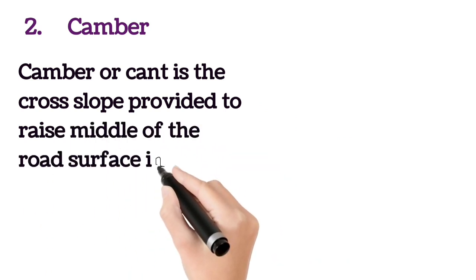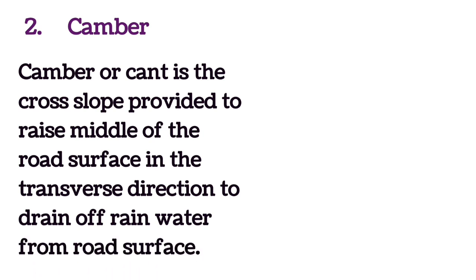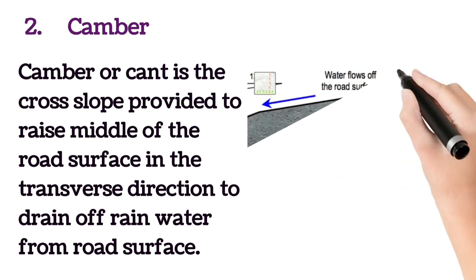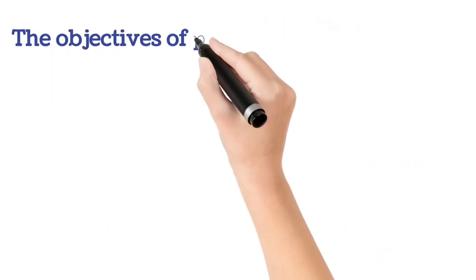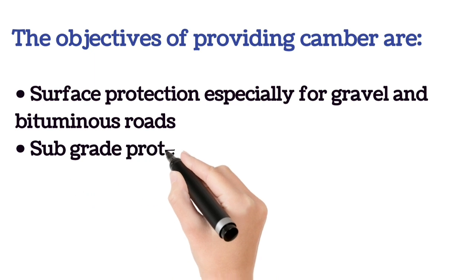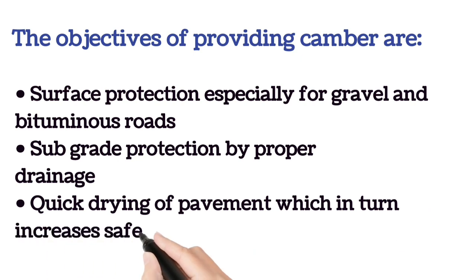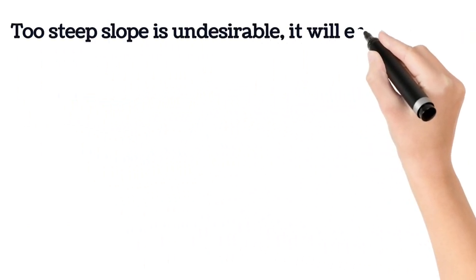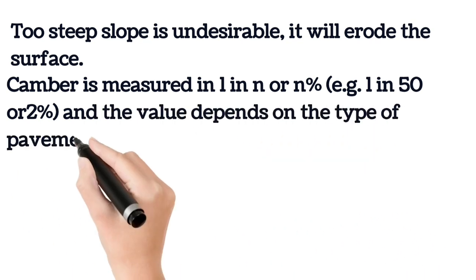Camber or cant is the cross slope provided to raise the middle of the road surface in the transverse direction to drain off rain water from the road surface. The central raised portion of the pavement is called camber. The objectives of providing camber are surface protection especially for gravel and bituminous roads, subgrade protection by proper drainage, and quick drying of pavement which increases safety. Too steep a slope is undesirable as it will erode the surface.